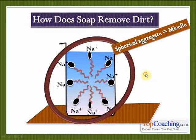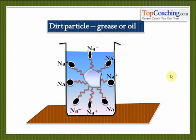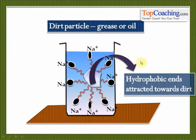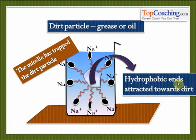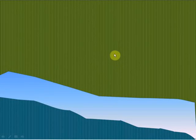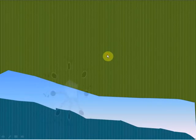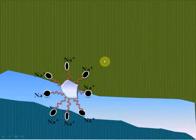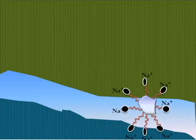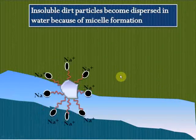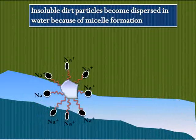A micelle has the different hydrophobic ends of the soap molecules near each other and the hydrophilic ends spread wide apart in the form of a sphere. Now, how does this spherical aggregate help in removing dirt? When there is a dirt particle, the micelle actually surrounds the dirt particle. All of the red carbon chains with the hydrophobic ends get attracted towards the dirt. The sodium ends or hydrophilic ends stay away from the dirt — they get attracted to water so they remain in contact with the water. Thus the micelle basically traps the dirt particle.